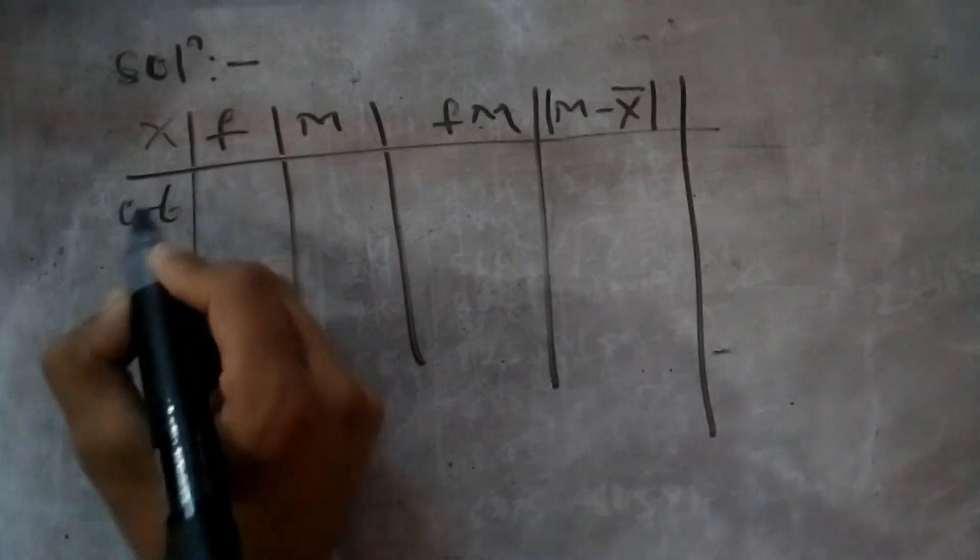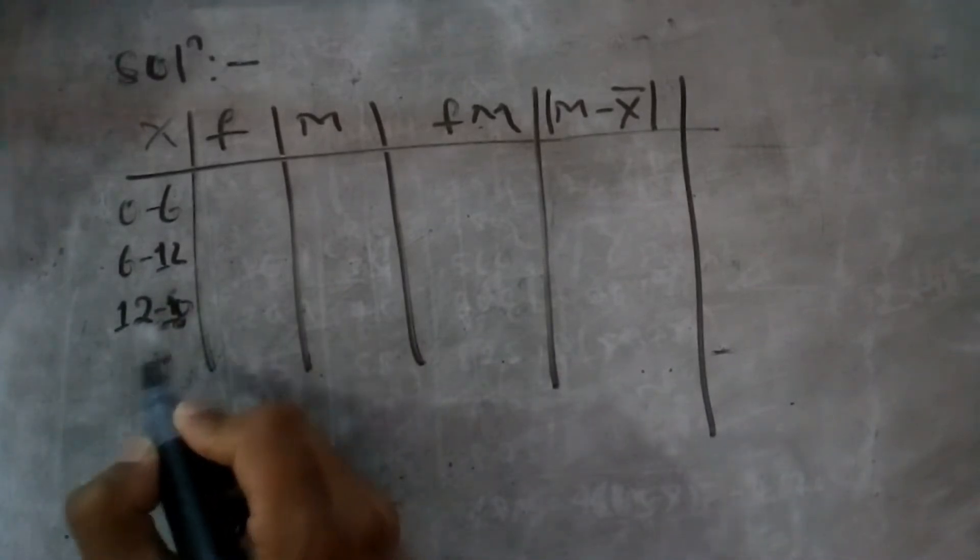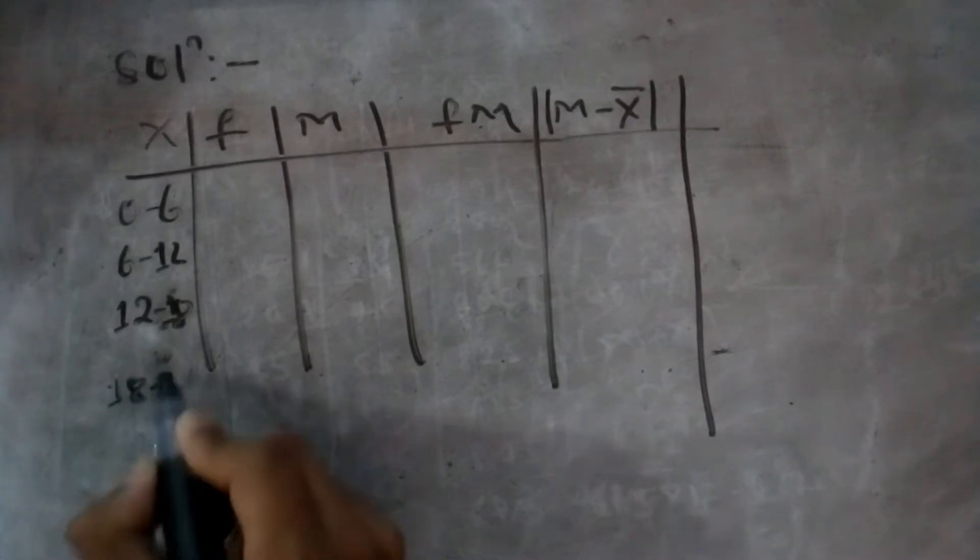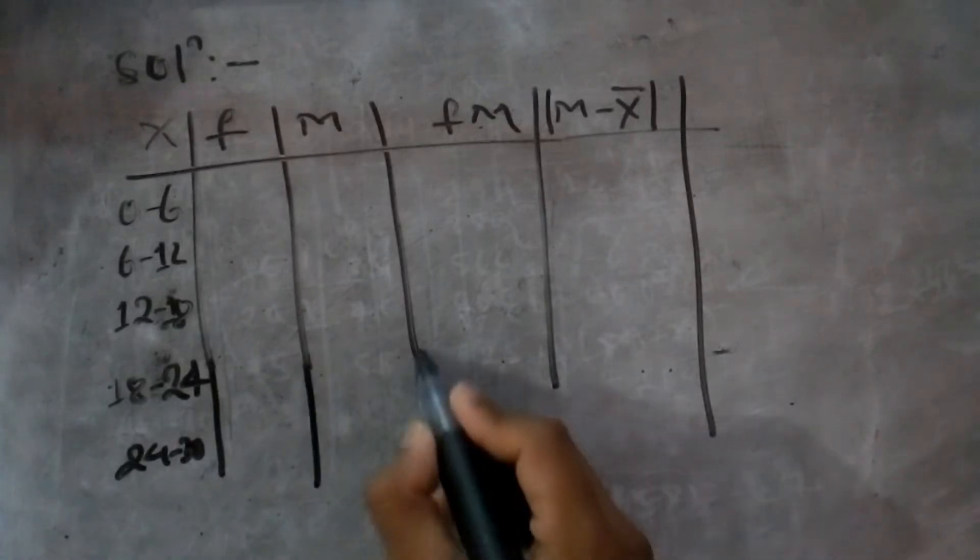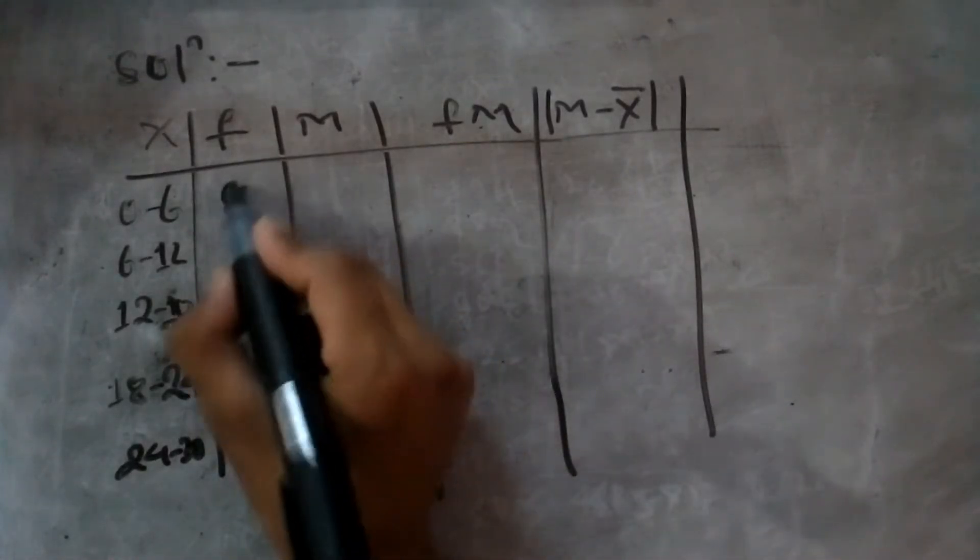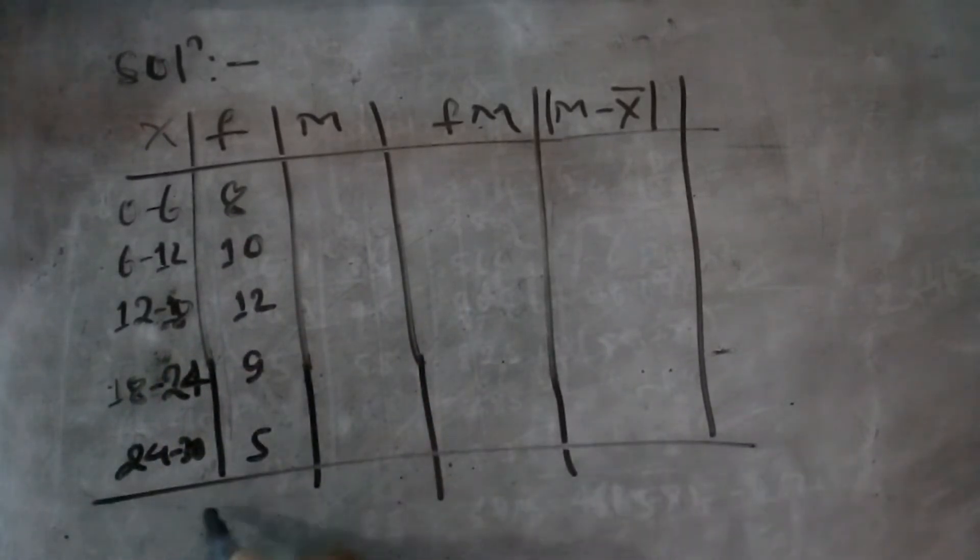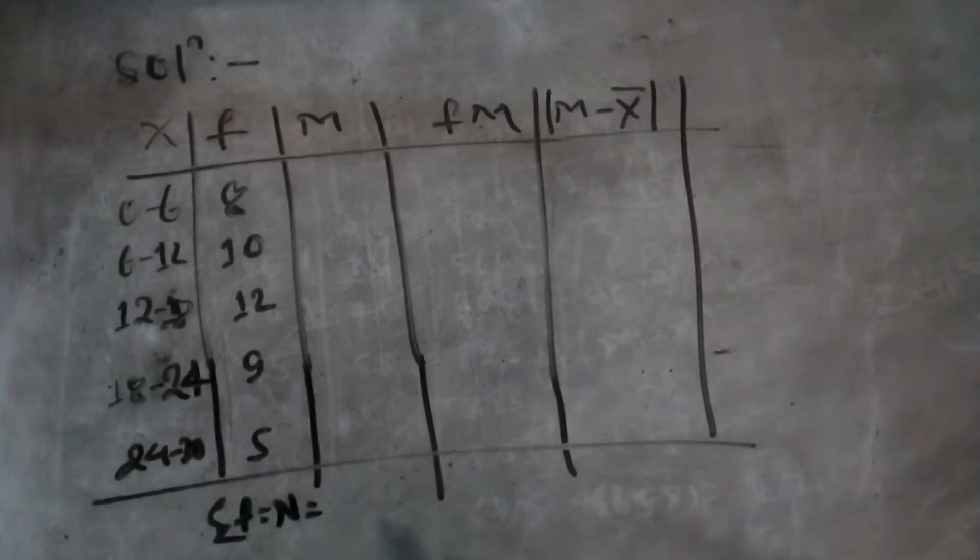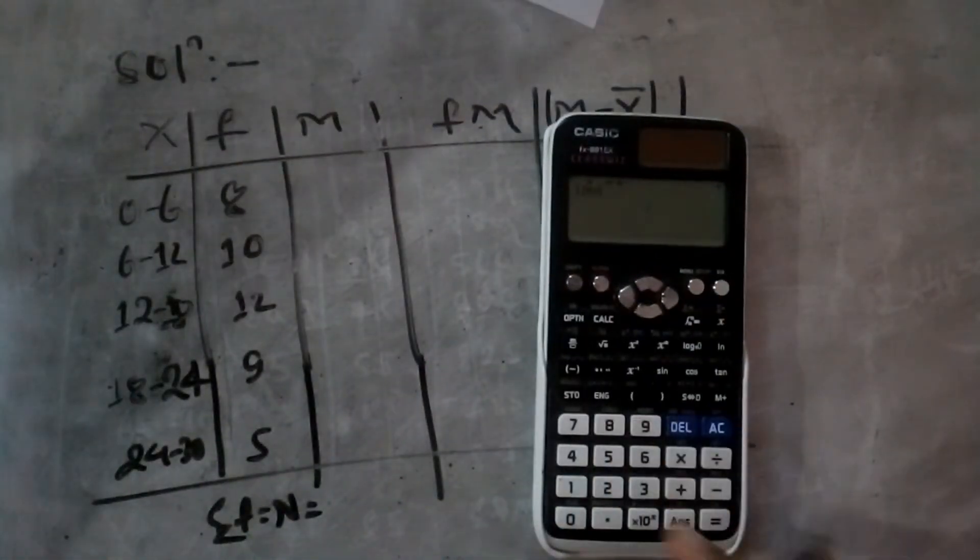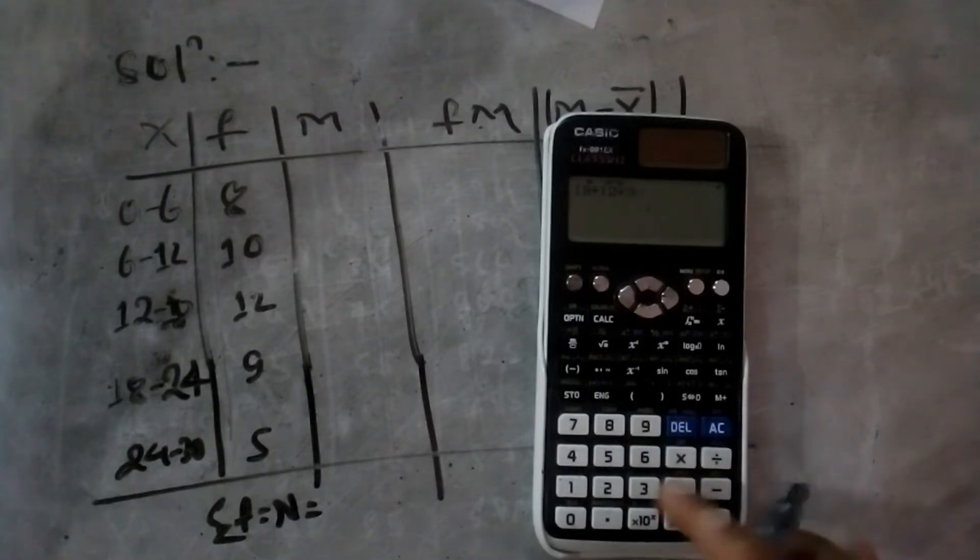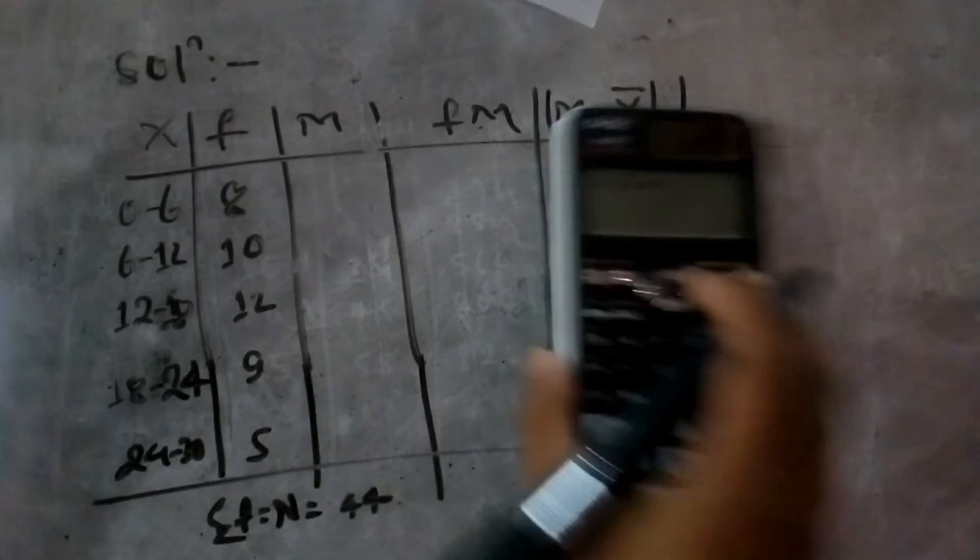The class intervals are: 0 to 6, 6 to 12, 12 to 18, 18 to 24, and 24 to 30. The corresponding frequencies are 8, 10, 12, 9, and 5. Summation of f equals n equals 44.